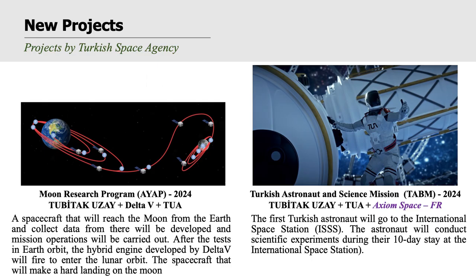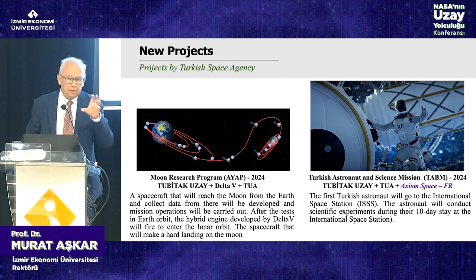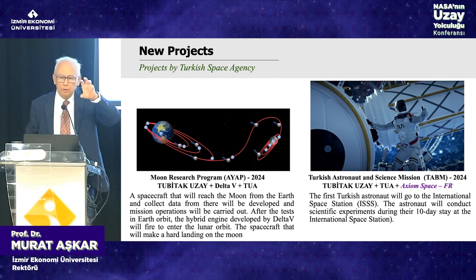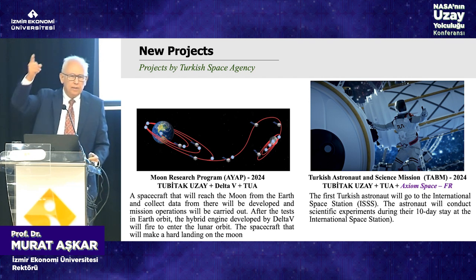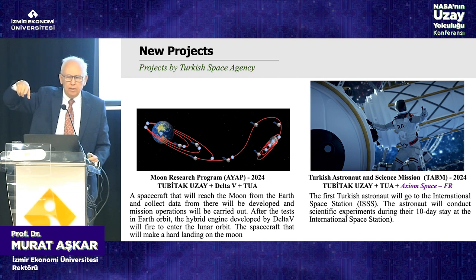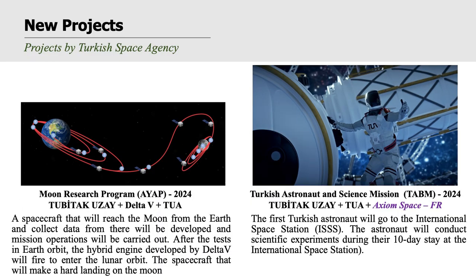As a member of the space research executive board at Tübitak, we are planning two projects. One is sending a small satellite to the moon — finding the way to get there is a significant challenge. The satellite must first reach Earth orbit, then widen that orbit, jump to a lunar orbit, and make a hard landing. It is an important project for Turkey to test the programs we develop.